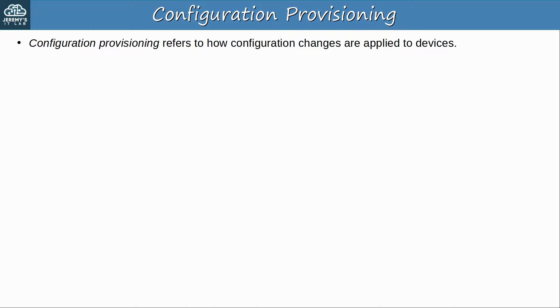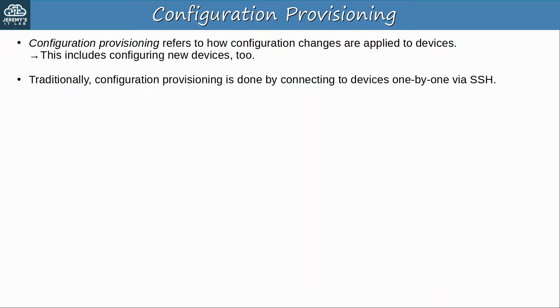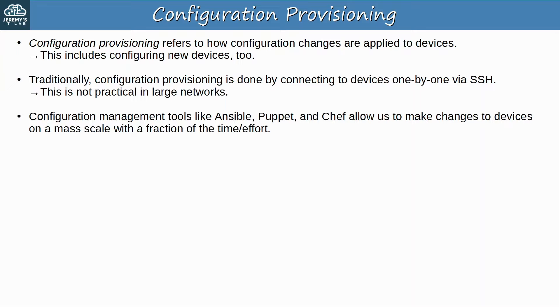Configuration management tools can help with issues like preventing configuration drift, but they can also assist us in configuration provisioning. Configuration provisioning refers to how configuration changes are applied to devices — this includes configuring new devices too. Traditionally, configuration provisioning is done by connecting to devices one by one via SSH or console, but this is not practical in large networks. It simply doesn't scale well in networks with hundreds or thousands of devices. Configuration management tools like Ansible, Puppet, and Chef allow us to make changes to devices on a mass scale with a fraction of the time and effort.